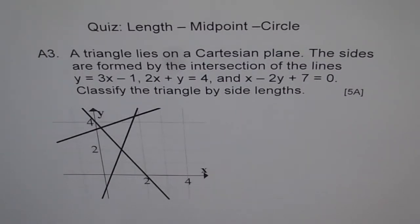If all lengths are equal, then it is equilateral. If two are equal, it is isosceles; otherwise scalene.